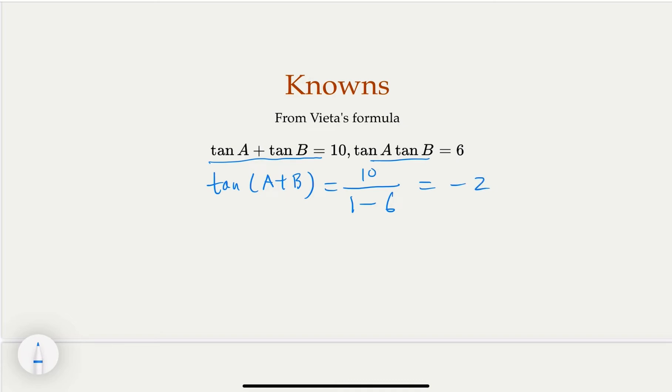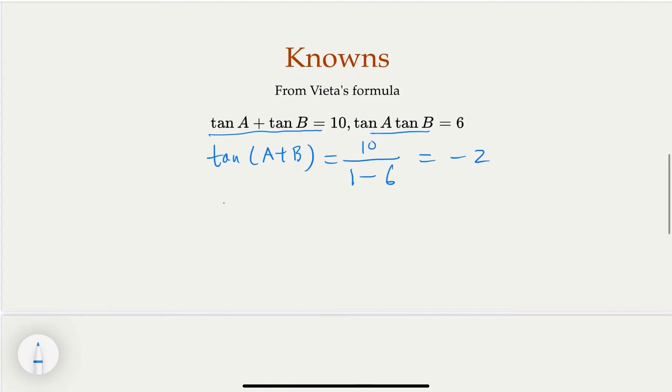Oh, that's a good number. So earlier we said that tan C would equal negative tan(A + B), right? Yeah, because they add up to 180 degrees here. So that would equal 2. Okay, that's good.